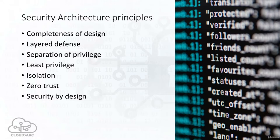Privilege separation is a technique in which a program is divided into parts. The different parts are limited to the specific privileges they require in order to perform a specific task. This is used to mitigate the potential damage of a computer security vulnerability. The least privilege security design principle states that each user should be able to access the system with the least privilege. Only those privileges should be assigned to users which are essential to perform the desired task.